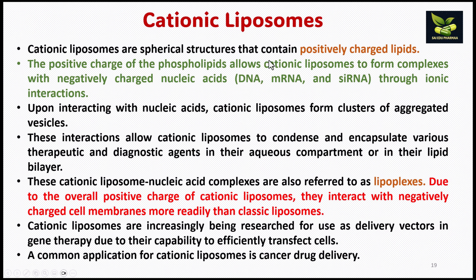Cationic liposomes are a very important category. They are spherical structures containing positively charged lipids. This positive charge allows cationic liposomes to form complexes with DNA, mRNA, and siRNA — negatively charged nucleic acids — binding by ionic interactions. After interacting with nucleic acids, the cationic liposome forms a cluster of aggregated vesicles, allowing them to condense and encapsulate therapeutic and diagnostic agents in the aqueous compartment or lipid bilayer. These complexes are also known as lipoplexes.